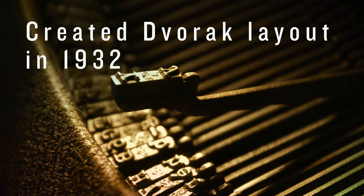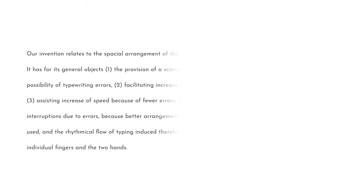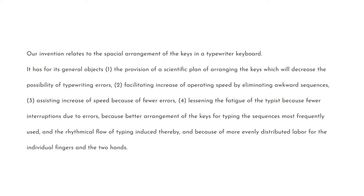The following is taken from a 1932 patent written by Dvorak and Dealey: 'Our invention relates to the special arrangement of keys in a typewriter keyboard. It is for general objects the provision of a scientific plan of arranging the keys which will decrease the possibility of typewriting errors, facilitating increase of operating speed by eliminating awkward sequences, assisting increase of speed because of fewer errors, lessening the fatigue of typists because of fewer interruptions due to errors, because of better arrangement of keys for typing the sequences most frequently used, the rhythmic flow of typing induced thereby, and because of more evenly distributed labor for all individual fingers and the two hands.' The Dvorak layout paved the way for other optimized keyboard layouts such as Colemak, Neo, and Beppo.